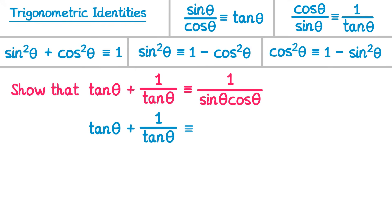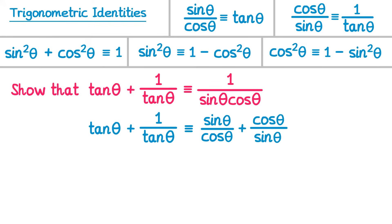Writing out the left hand side: tan theta equals sin theta over cos theta, and 1 over tan theta equals cos theta over sin theta. So we have sin theta over cos theta plus cos theta over sin theta. We need to combine these into one fraction. The common denominator for cos theta and sin theta is sin theta cos theta. For the first fraction, multiply numerator and denominator by sin theta, giving sin squared theta over sin theta cos theta.